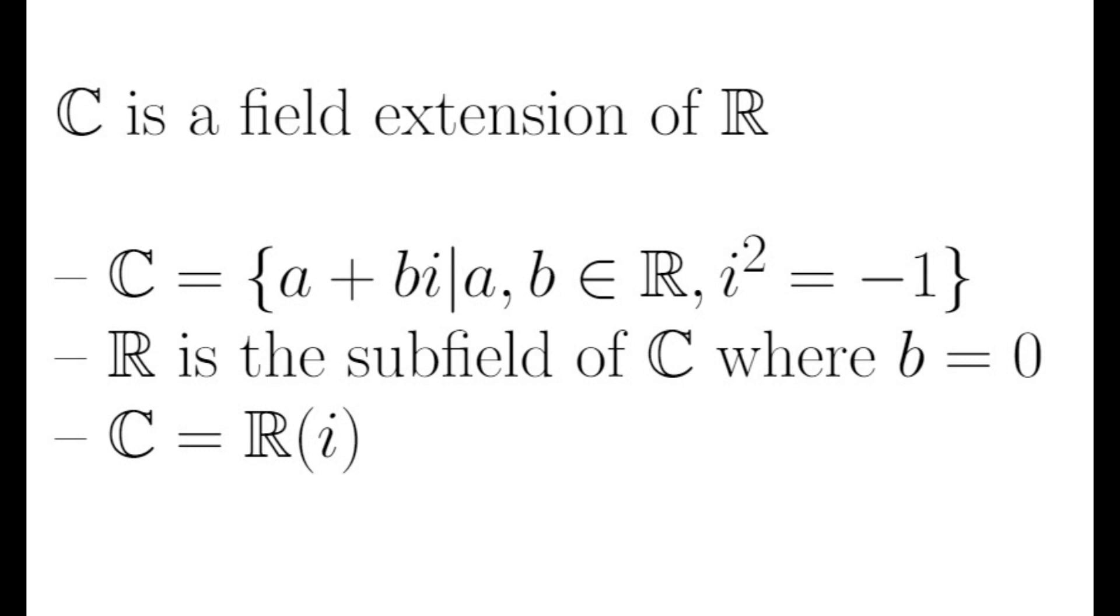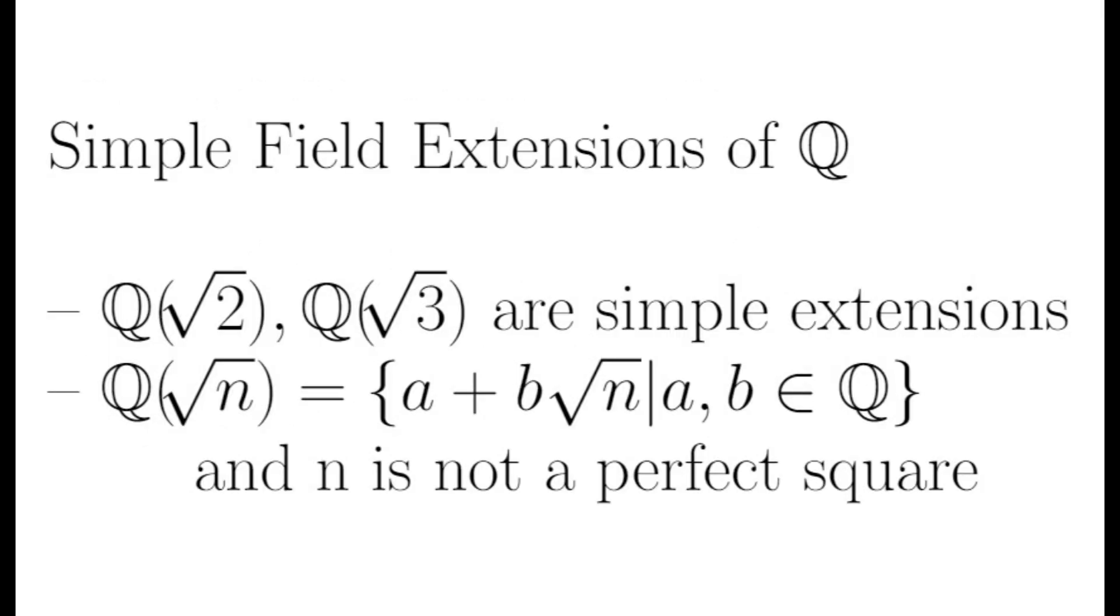Let's take a look at some other simple field extensions. Recall that the rationals Q are a subfield of R that contain numbers that can be expressed as the ratio of two integers. Since the square roots of integers that are not perfect squares are irrational, they are not in Q, but we can create a simple field by adjoining them.